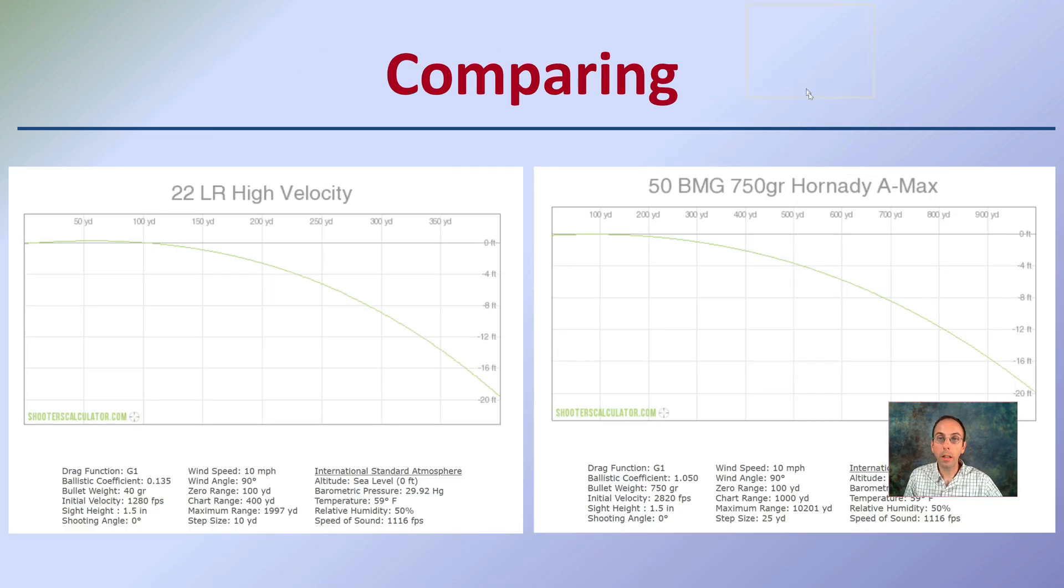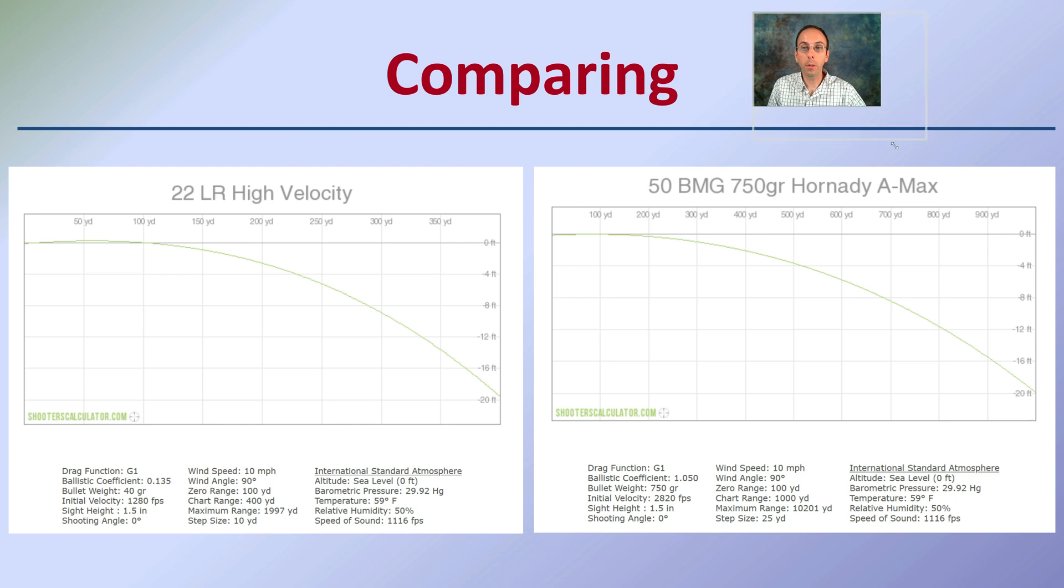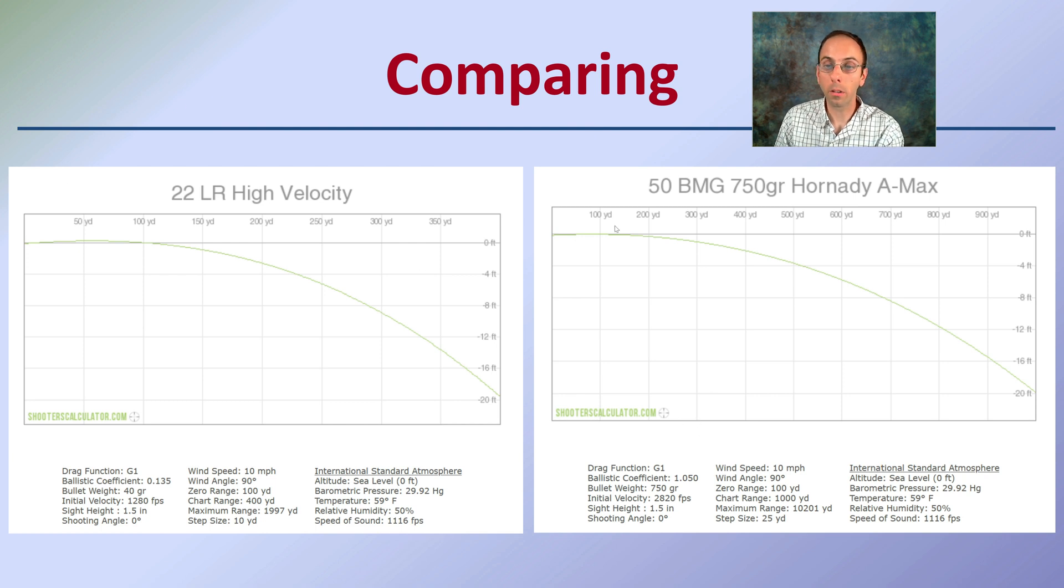Now looking here, what I've done is a comparison. So on the left again, we see the 22, and on the right here we see the 50 cal. Very similar kind of methods of travel, the shape looks very similar. However, when we look closer, there are some distinct differences.